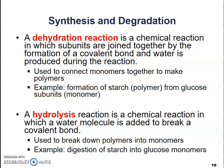A dehydration reaction is a chemical reaction in which subunits are joined together by the formation of a covalent bond and water is produced during the reaction. It's used to connect monomers together to make a polymer — for example, the formation of starch from glucose subunits. Hydrolysis reactions are chemical reactions in which a water molecule is added to a molecule in order to break the covalent bond. So dehydration puts them together, hydrolysis takes them apart again. An example of hydrolysis would be the digestion of starch in your stomach — your stomach takes that large starch molecule and breaks it down into single glucose monomers that your body can then absorb more easily.